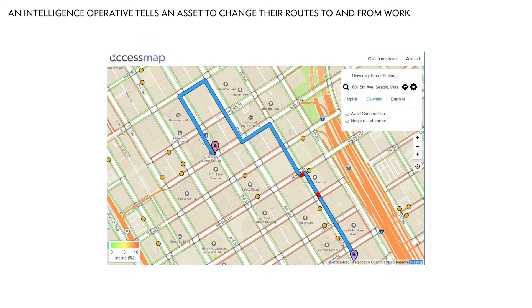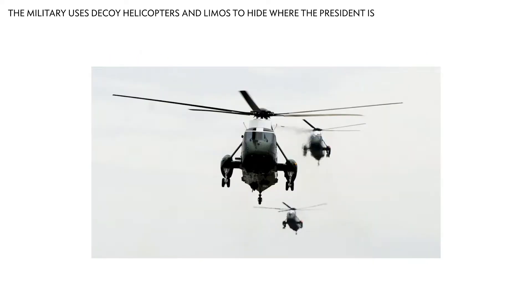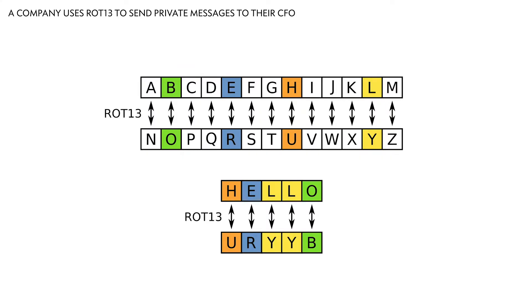How about telling someone to change their routes when they travel to and from somewhere — is that a good idea? What about using multiple helicopters or limos to hide a VIP — is that security or not? And finally, Caesar ciphers like ROT-13, where you rotate clear text by 13 characters to produce the cipher text — how is that for security?